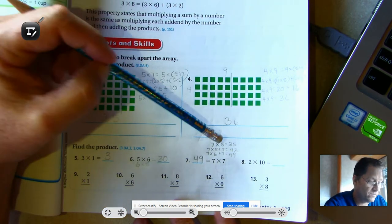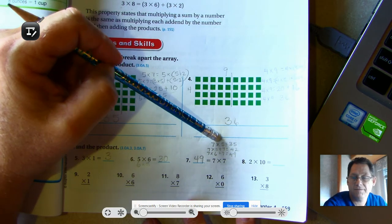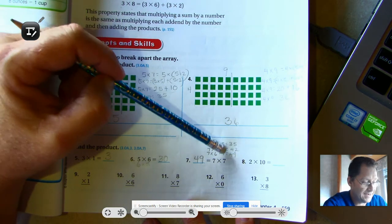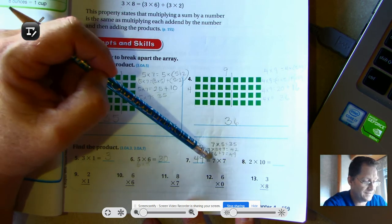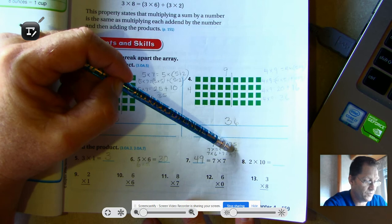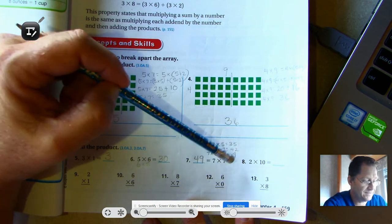So in this one, I started with a fact I knew. Seven times five is 35. I added the sixth seven to get seven times six, which is 42. And then seven times six, which was the 42, plus the last seven gives me 49.